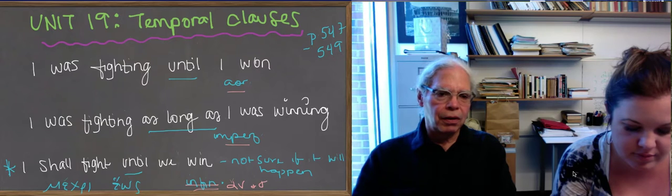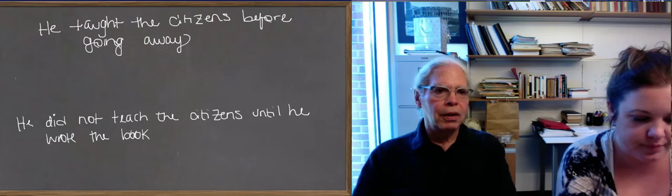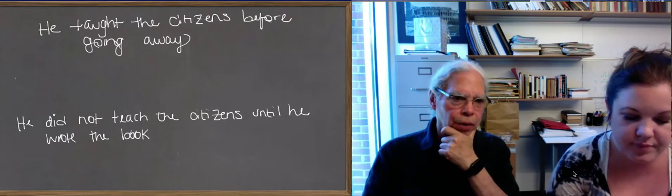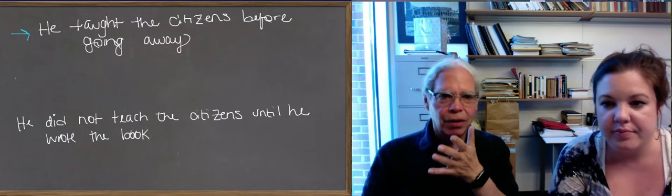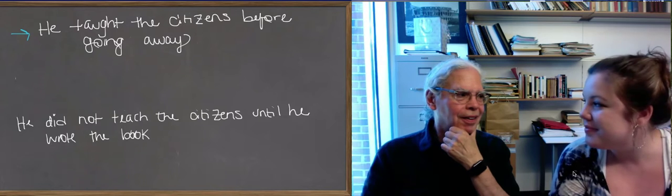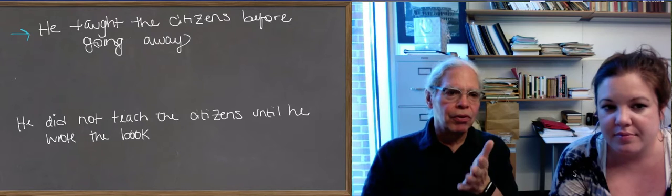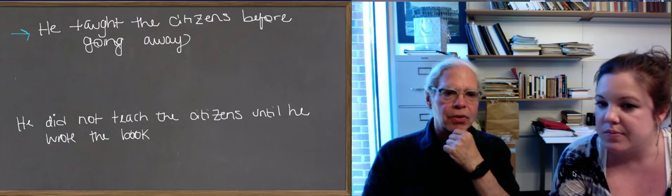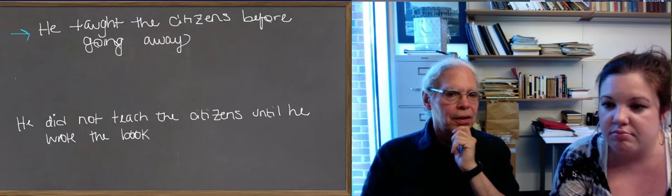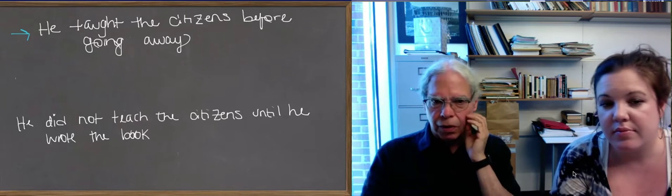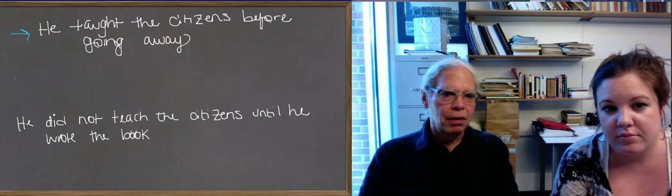Now let's look at another kind of temporal clause with the same kinds of problems. He taught the citizens before going away. We don't know whether he went away, right? That's ambiguous, to some extent. Or at least it's more ambiguous than, he did not teach the citizens until he wrote the book. So this is another kind of before, or the word for before that you use in clauses like this is prin.